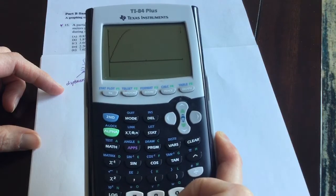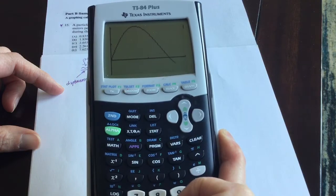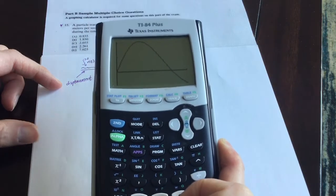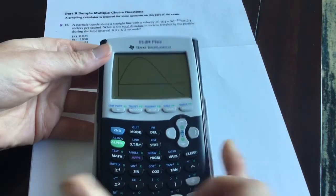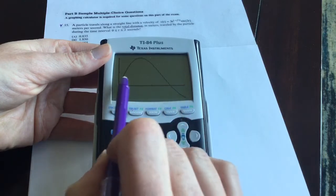Okay, so here's the velocity function. Notice from zero to whatever that number is, it's positive, but then velocity becomes negative for the rest of the piece here. So let's figure out what time value that is where your velocity changed from positive to negative.